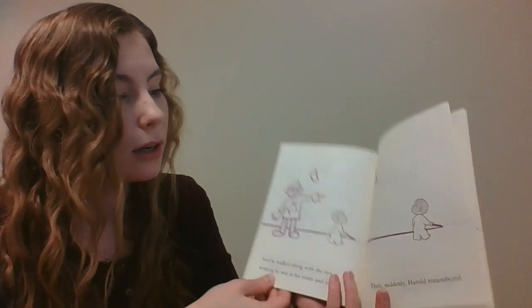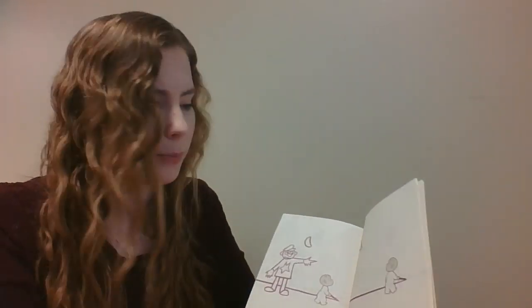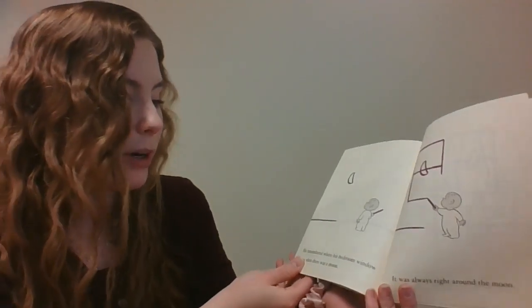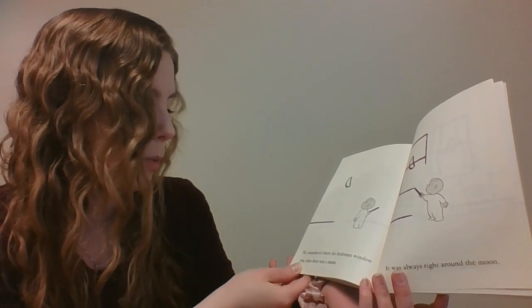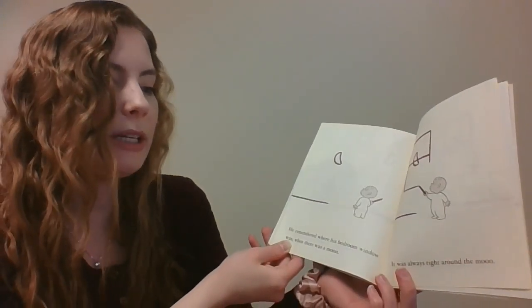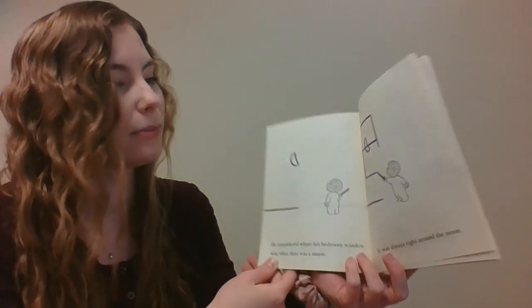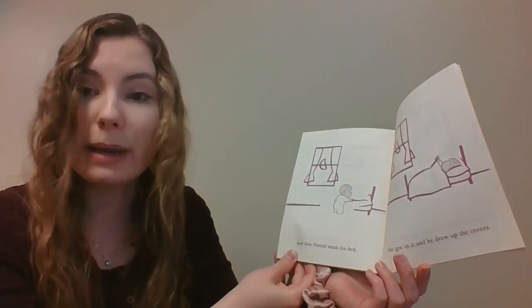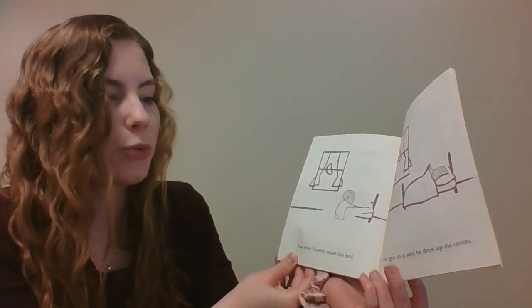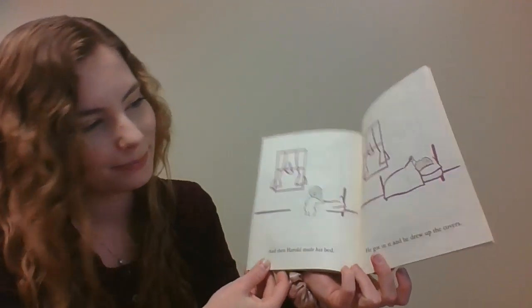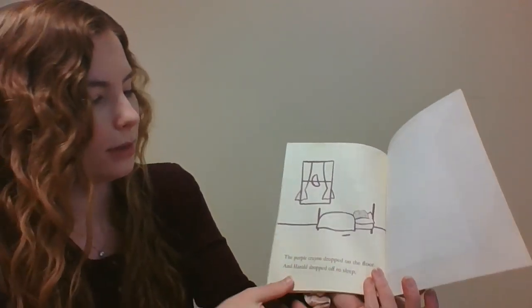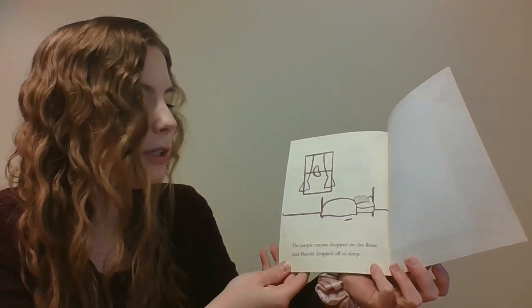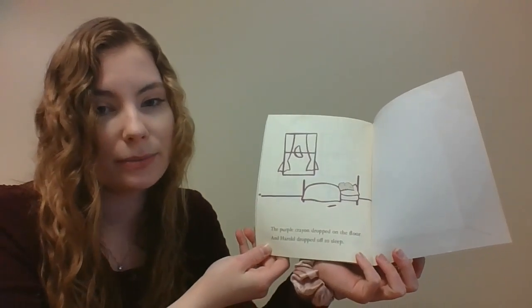What do you think he remembered? He remembered where his bedroom window was when there was a moon. It was always right around the moon. And then Harold made his bed. He got in it and he drew up the covers. The purple crayon dropped on the floor and Harold dropped off to sleep. The end.